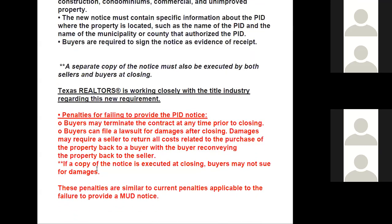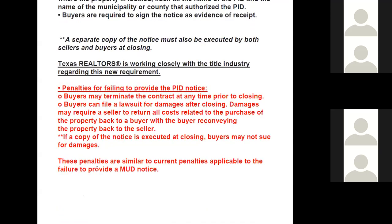Penalties for failing to provide the PID notice: buyers may terminate the contract at any time prior to closing — forget about the option period, forget about appraisal issues. If we fail to deliver this, it doesn't matter. Buyers can also file a lawsuit for damages after closing. Damages may require a seller to return all costs related to the purchase of the property back to the buyer — that could mean the option money, the home inspection fee of $450, the $80 termite inspection, and the $700 appraisal fee.